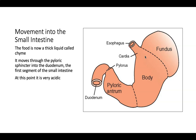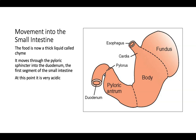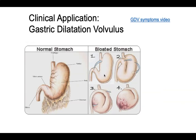That thick liquid is called chyme — spelled C-H-Y-M-E. It moves through the pyloric sphincter into the duodenum, the first segment of the small intestine. At this point, the chyme is very acidic. It works its way from the fundus through the body of the stomach and the pyloric antrum, then exits through the pyloric sphincter. It's important to know both the cardiac sphincter and the pyloric sphincter locations.